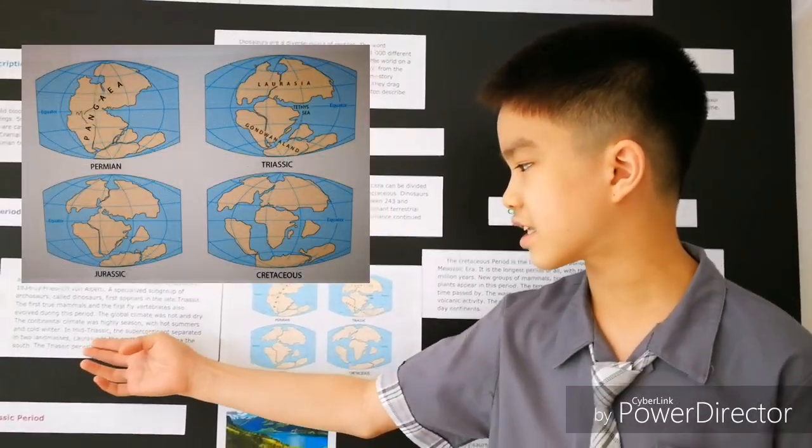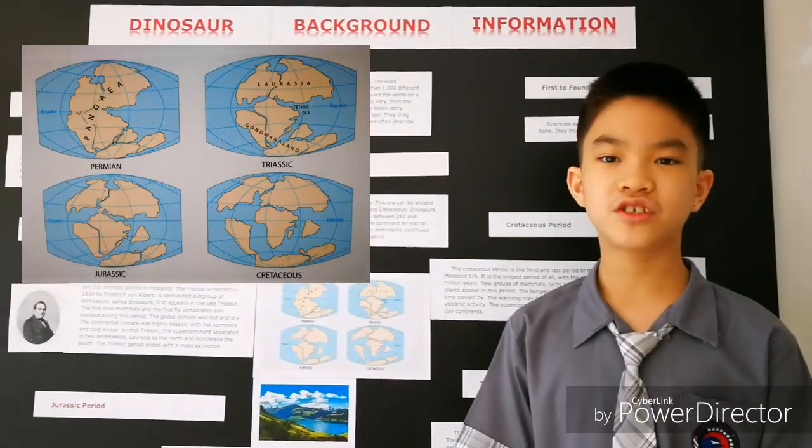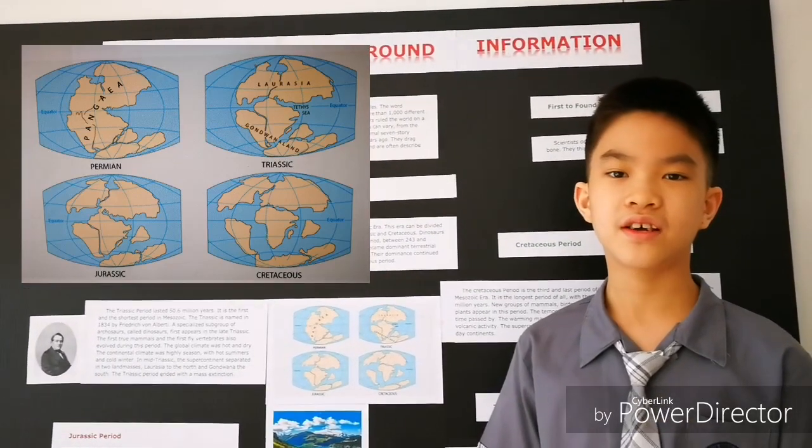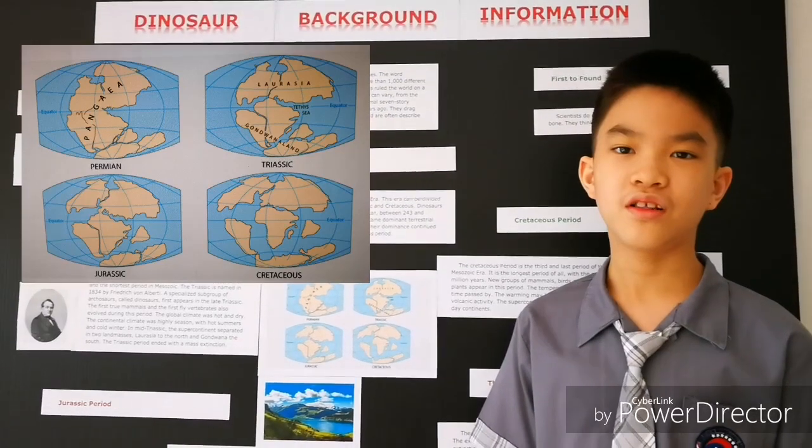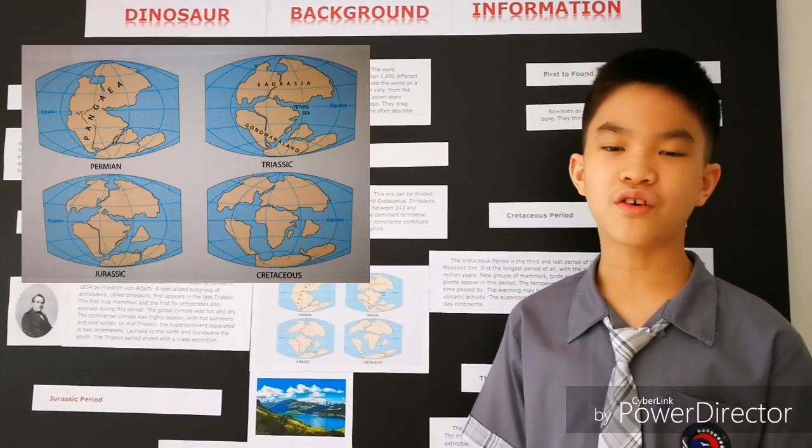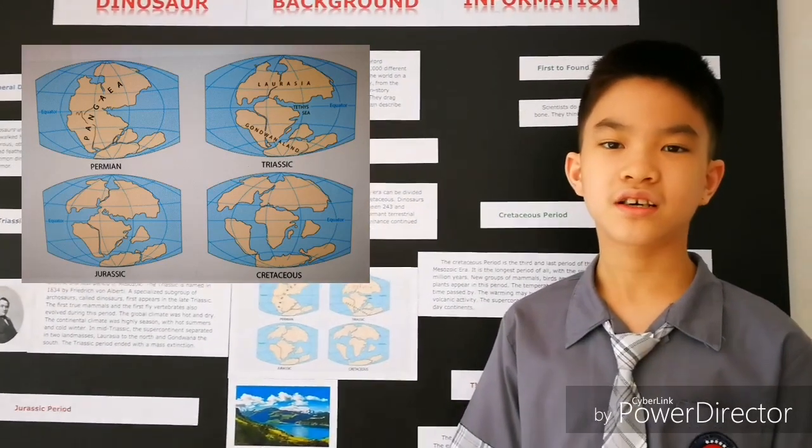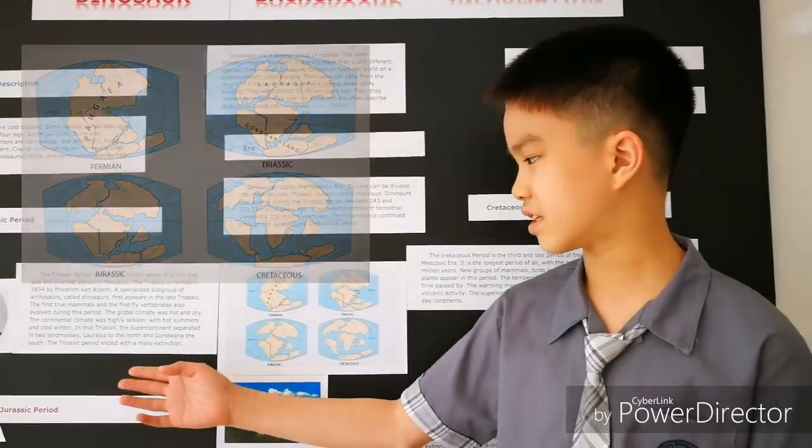In the Triassic, the supercontinent of Pangea broke in half with landmass. One is called Laurasia moving to the north and another is Gondwana moving to the south.